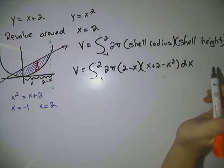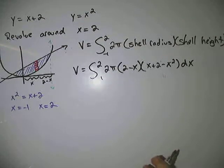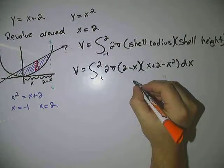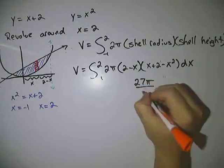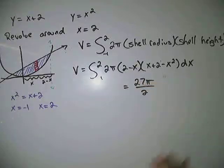So there's some multiplying here and distributing. The integral is pretty easy. It's all going to be just your basic integral there. But you will get a final answer of 27 pi over 2.